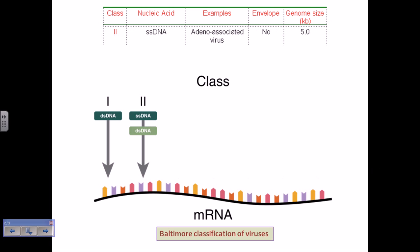The example of Class 2 viruses is adeno-associated virus — a very small virus with a genome size of only 5 KB, and it is unenveloped. Importantly, adeno-associated virus requires the presence of adenovirus to complete its life cycle — that's why it's named 'adeno-associated.' These Class 2 viruses are not that important because they rarely infect human beings; they usually infect insects and other organisms.